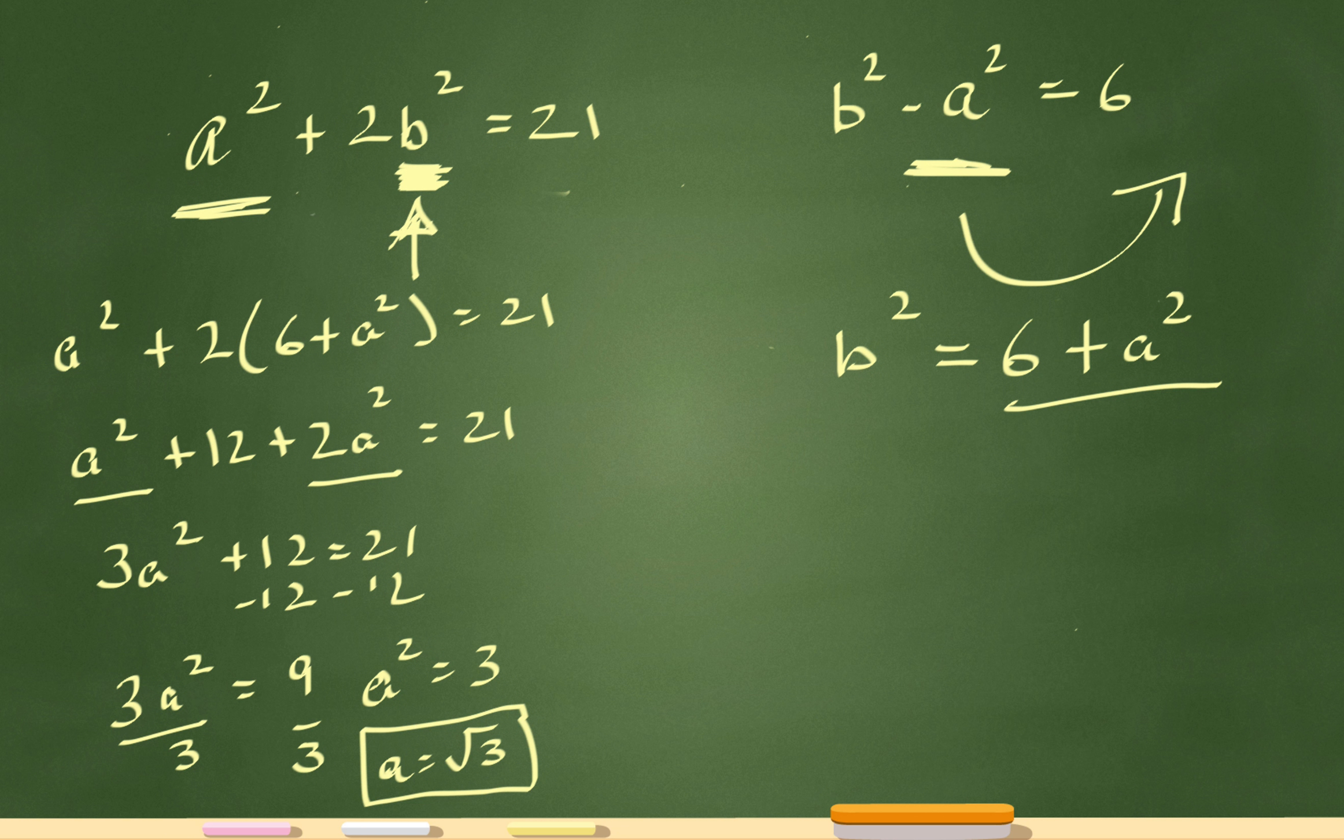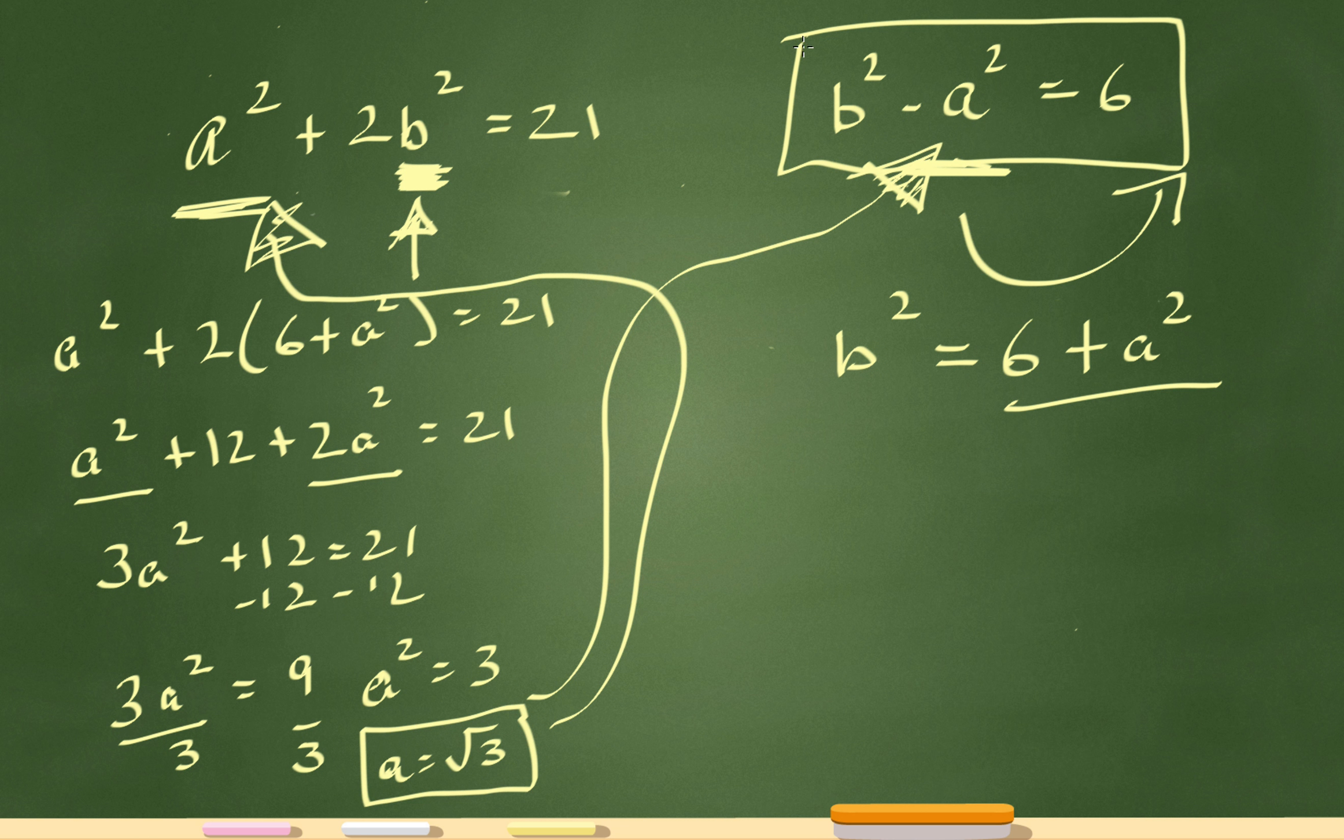Now the question is asking for the value of b. I'm going to plug a equals square root of 3 either over here or over here. It doesn't matter where I plug it back in. This one seems easier, so I'm going to plug it in this one.